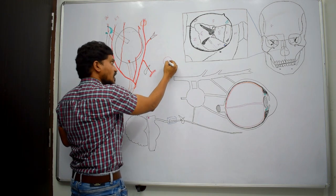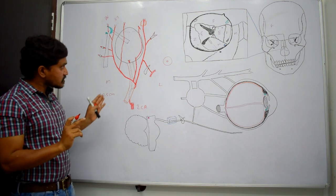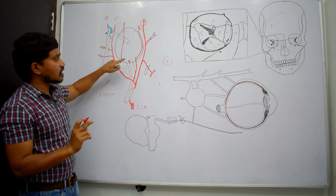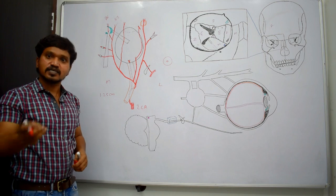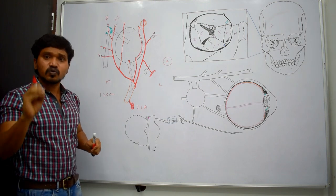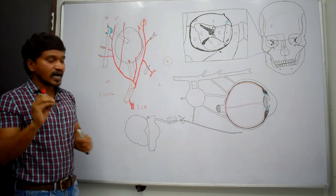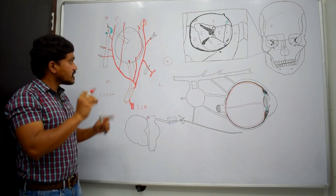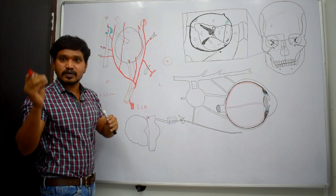Within the optic nerve, you can see the central artery of the retina. It passes within the substance of the optic nerve and reaches the optic disc, where it divides into branches. These branches supply the retina. This is the only branch supplying most of the retina, and it is an end artery because it does not have any efficient anastomosis with neighboring blood vessels.